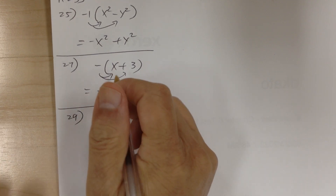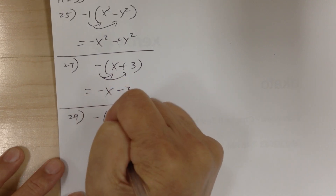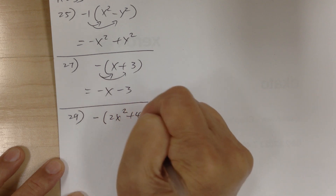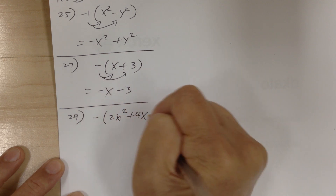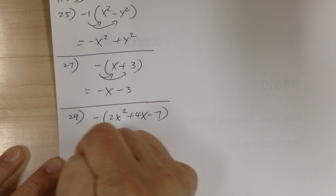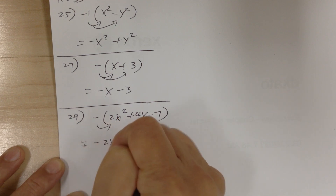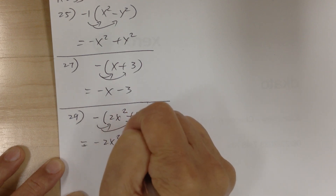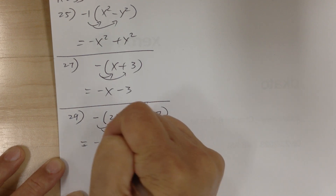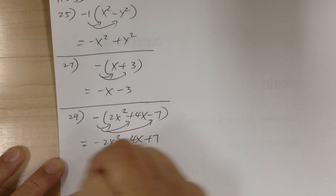Number 29. You have negative 1 times (2x squared plus 4x minus 7). Distribute: it would be minus 2x squared, then minus 4x, then plus 7.